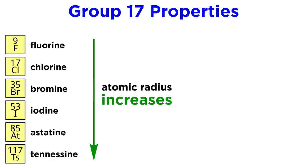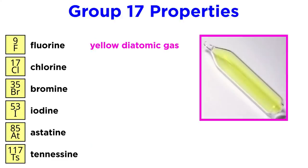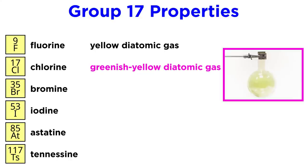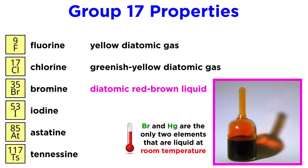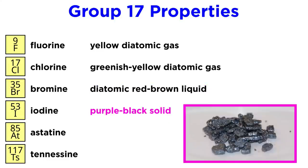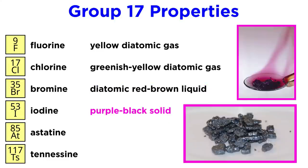Now let's talk about properties. Of course we know that atomic radius increases going down the group, and this has an impact on their physical properties. Fluorine is a yellow diatomic gas. Chlorine is a greenish-yellow diatomic gas. Bromine is also diatomic, but it is a red-brown liquid at room temperature, with a high vapor pressure. Quite interestingly, this characteristic applies only to bromine and mercury — all other elements in their most stable allotrope are either solid or gas at room temperature. Finally, iodine is a purple-black solid, whose crystals easily sublime to generate a deep violet vapor.